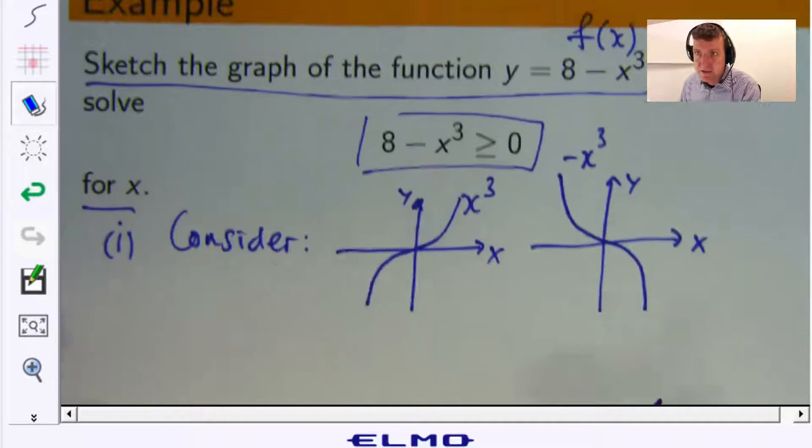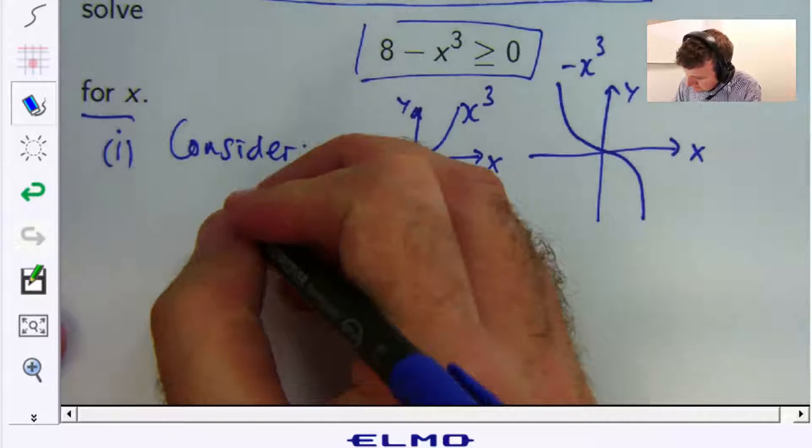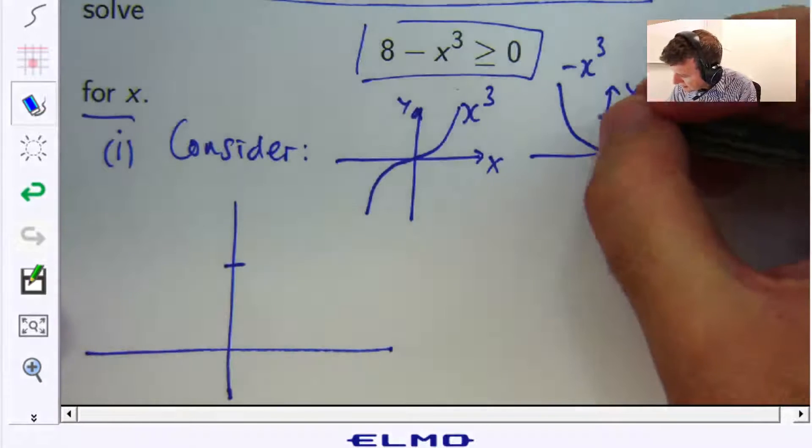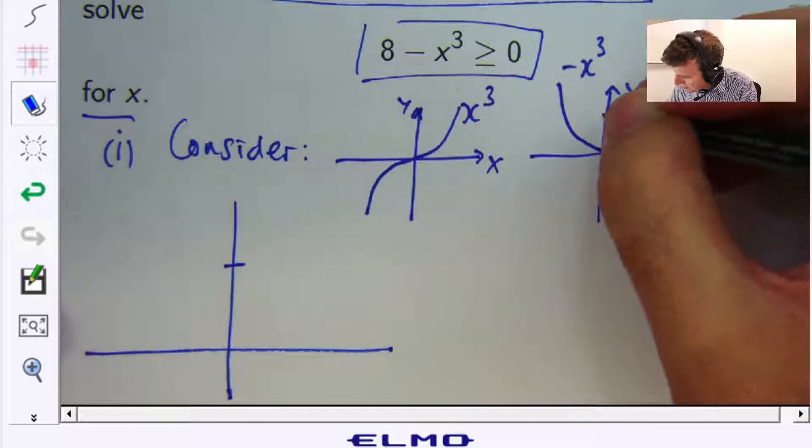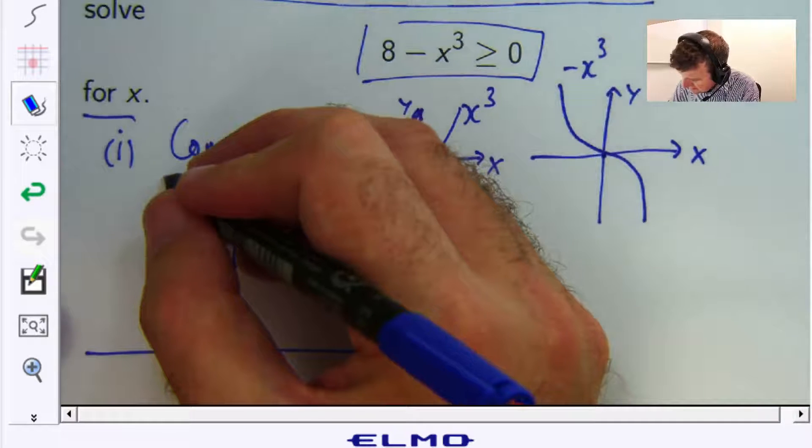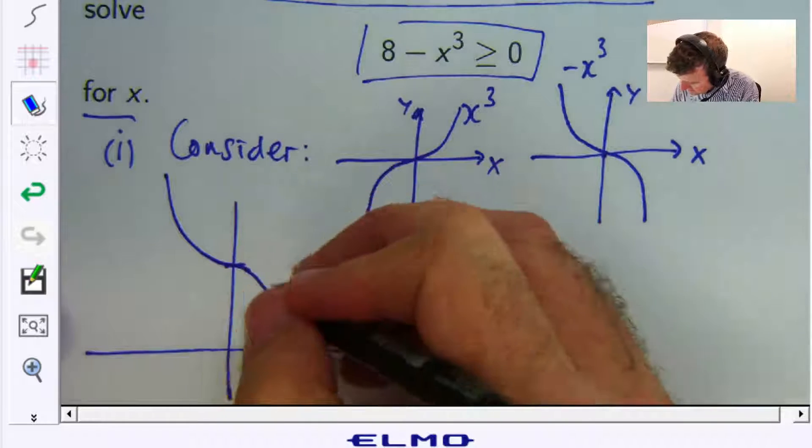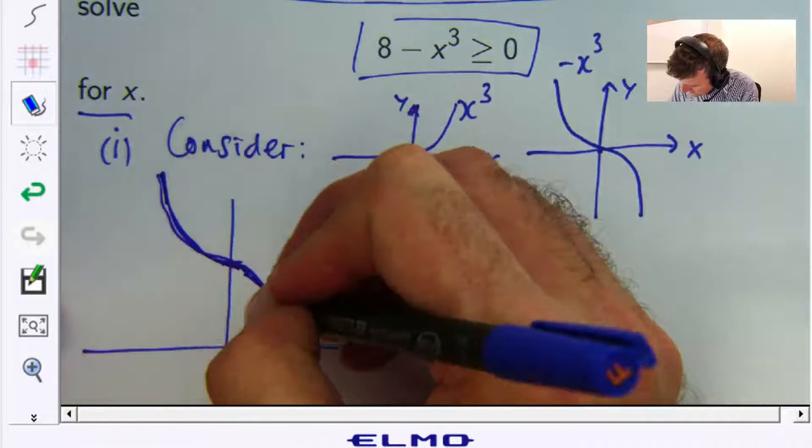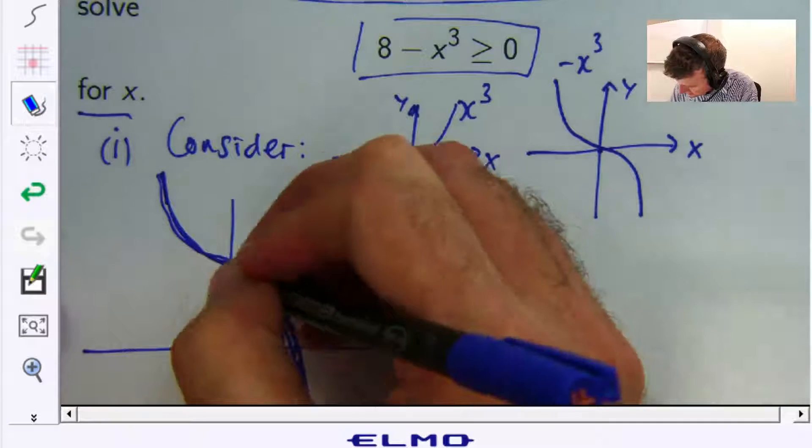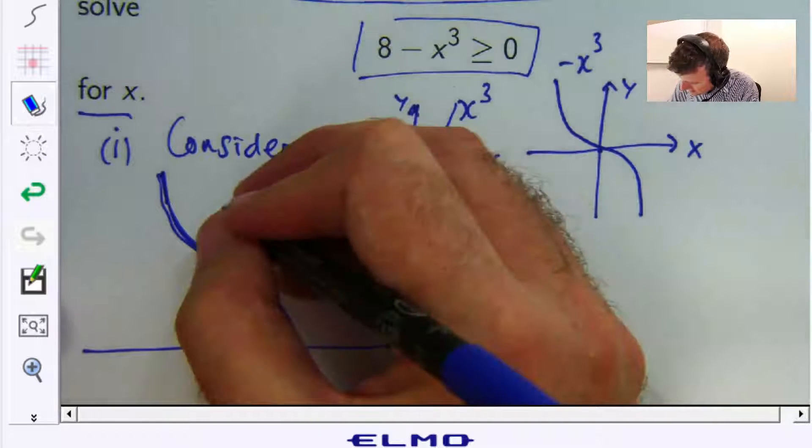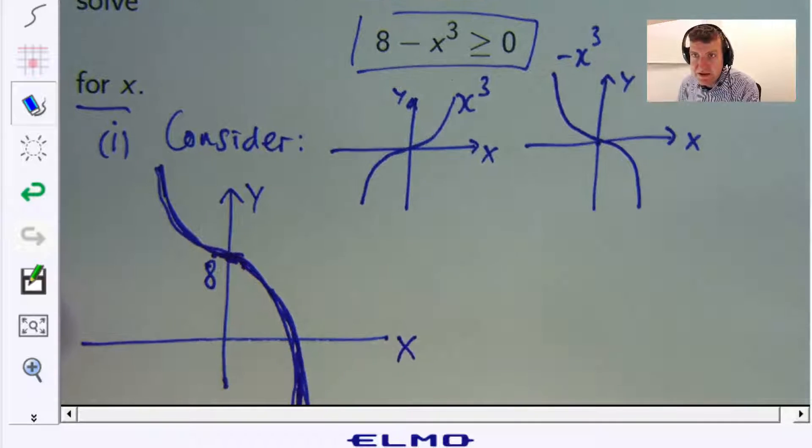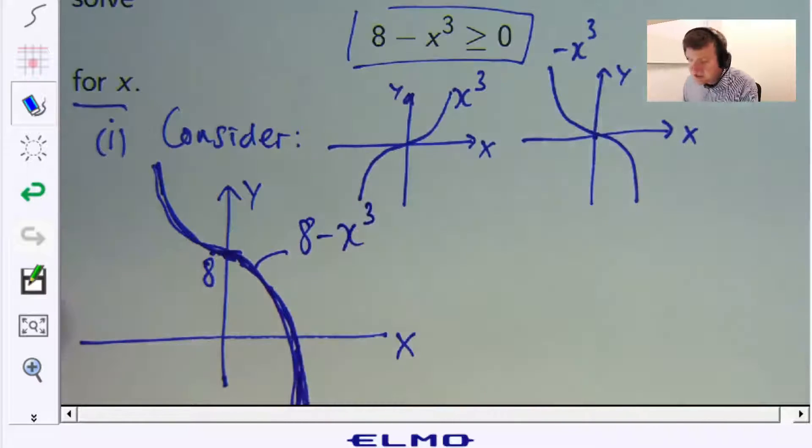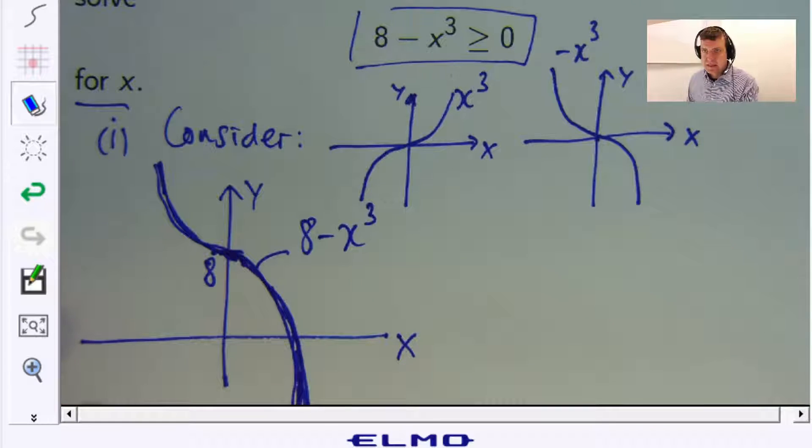So I'll draw a slightly bigger one for that one. So basically I'm going to have something like this. So it's going to cut at 8 because that point goes 8 units up. Let me fix that up. So I've made a really thick graph there now. And this is the graph of 8 minus x cubed. So there's a graph.